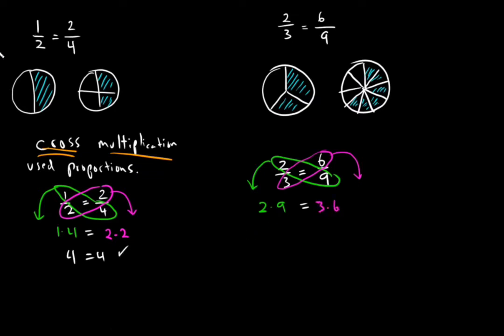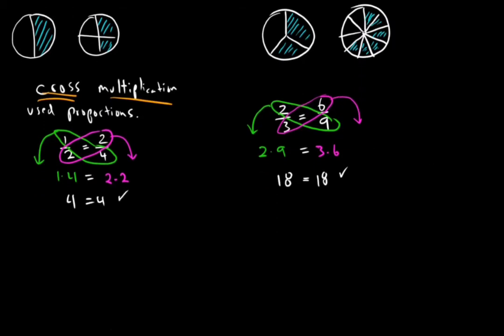Now I multiply 2 and 9, so that's going to give me 18. Bring down the equal sign. 3 times 6 is 18. That is, again, a true statement. 18 equals 18. That is true. So that means that 2 thirds is equivalent to 6 over 9. Remember, this doesn't really mean much as far as the question. The question is, are they equivalent? And now, based on this information, we can say that they are equivalent.